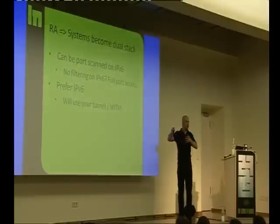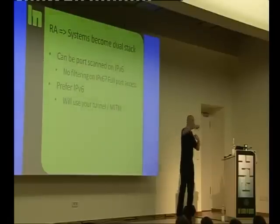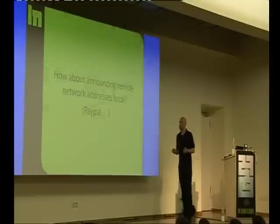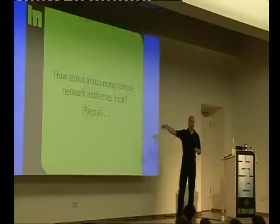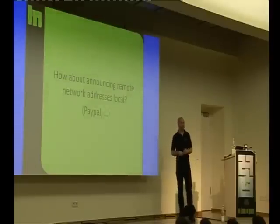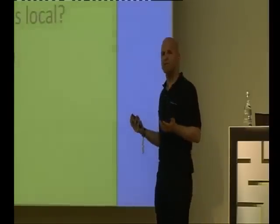Systems will prefer IPv6. If you use a tunnel, announce yourself as a router, say IPv6 is on the network — they will start using IPv6. You tunnel to the real internet and you have a man-in-the-middle attack. Especially interesting if you're announcing remote network addresses as local — say for PayPal or similar — and now every system thinks that network prefix is a local system.